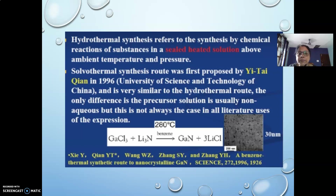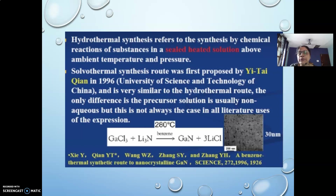In solvothermal synthesis, which was actually first proposed by Yai Tai Yan, this is quite new — only in 1996 at the University of Science and Technology of China was this process first utilized. It is very similar to the hydrothermal route, but the only difference is that the solvent used will be some non-aqueous solvent. Later it was found that numerous methods of solvothermal synthesis were adopted where some aqueous solvents were also taken in some stages, but the very beginning of this process utilized a non-aqueous solvent.